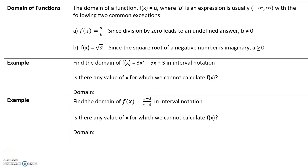The domain of a function f(x) equals u, where u is an expression, is usually negative infinity to infinity, which means for all values the graph will exist, with the following two common exceptions. If f(x) is a rational expression, which means it contains a fraction, since division by 0 leads to an undefined answer, the denominator b cannot equal 0.